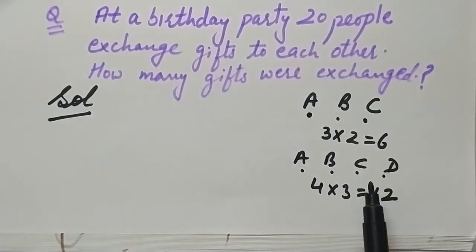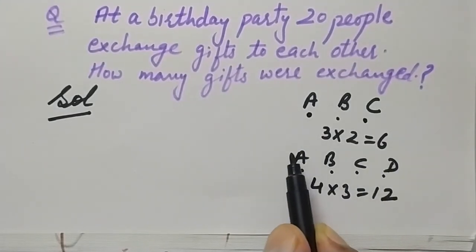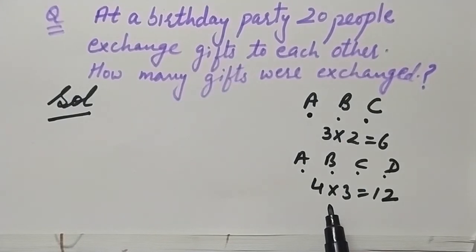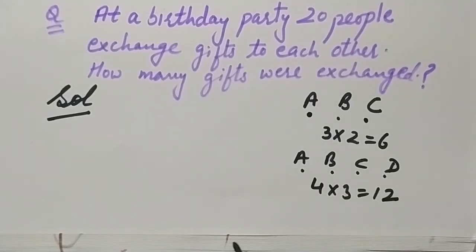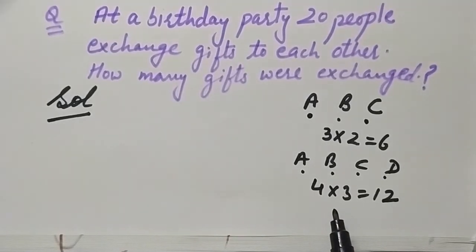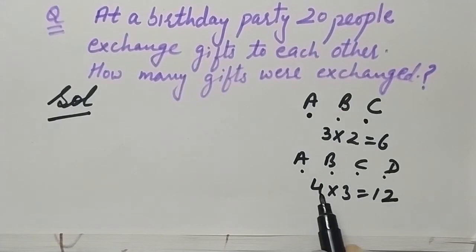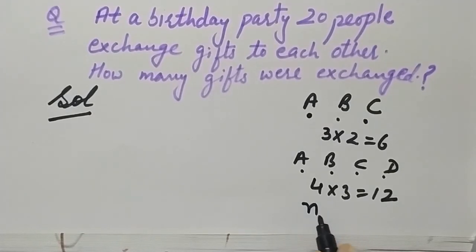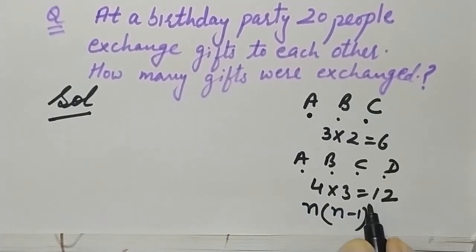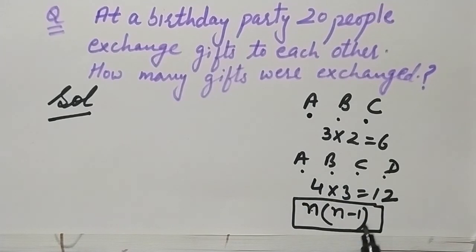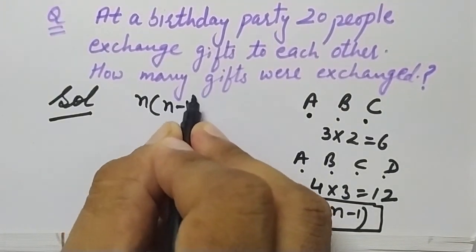How many people were there? Four. And each exchanged one number less than that — because each person does not give a gift to themselves. If 20 people are there, each person will exchange 19 gifts. So the formula is: total number of people multiplied by one less than that. For four people: 4 × (4 - 1) = 4 × 3 = 12. This gives us the general formula: n × (n - 1).